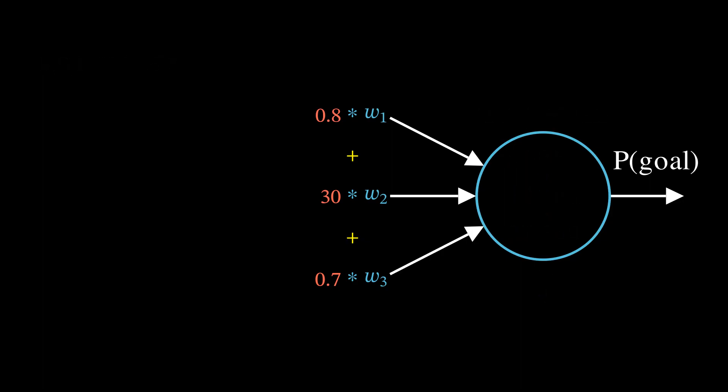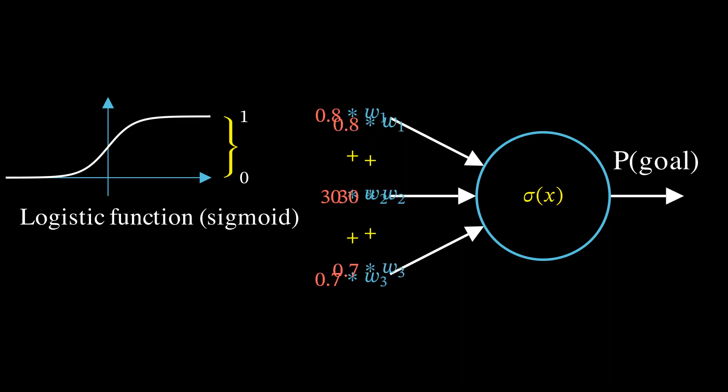Luckily, there is an easy fix. We can use the so-called logistic function, also known as the sigmoid. It looks like an infinitely stretched letter S, and its output is always between 0 and 1. If we pass the output of the neuron through this function, it will be squashed into the 0-1 interval, turning it into a probability. In general, a function that is applied to the weighted sum inside a neuron is called an activation function. At this point, I feel obligated to mention that in practice, sigmoid is far from being the only activation function used. There is a whole range of possible choices. But for our explanation, the sigmoid is more than enough.